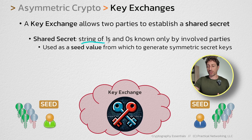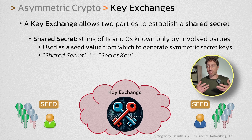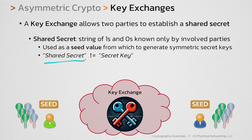Even though a shared secret is just a string of ones and zeros, it's not the same thing as a secret key. A secret key is also just a string of ones and zeros, so technically you could say they are both the same thing, but they are different in what their purposes are. A shared secret is meant to be used as a seed value to generate additional symmetric secret keys, and then the secret keys themselves will be used to actually protect the data.